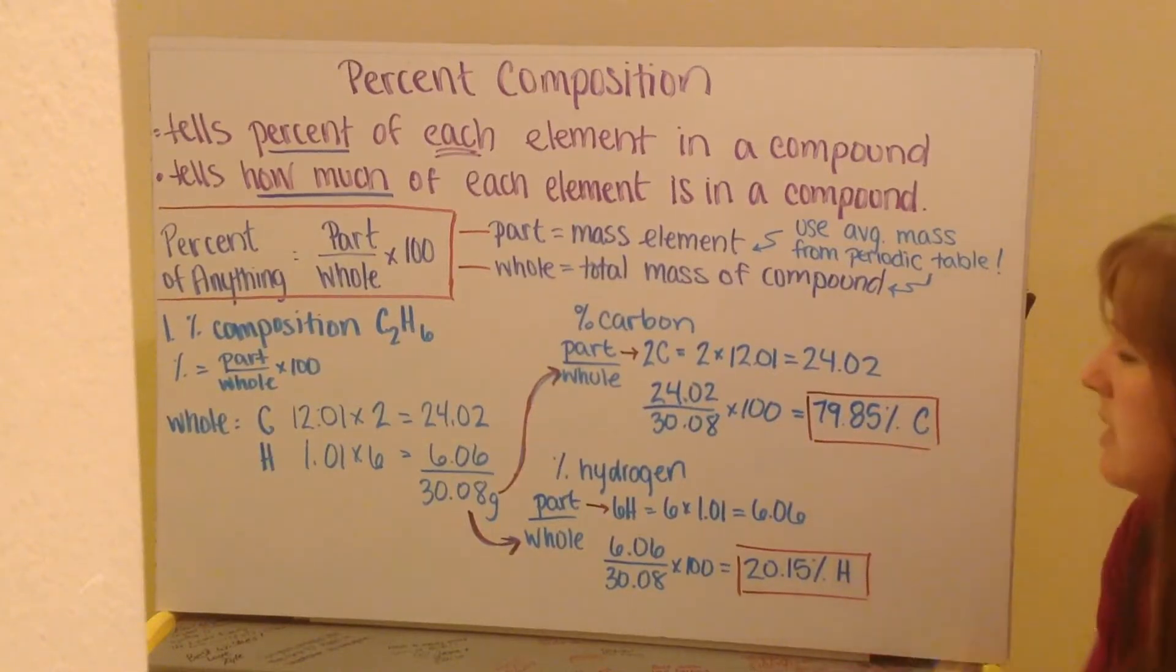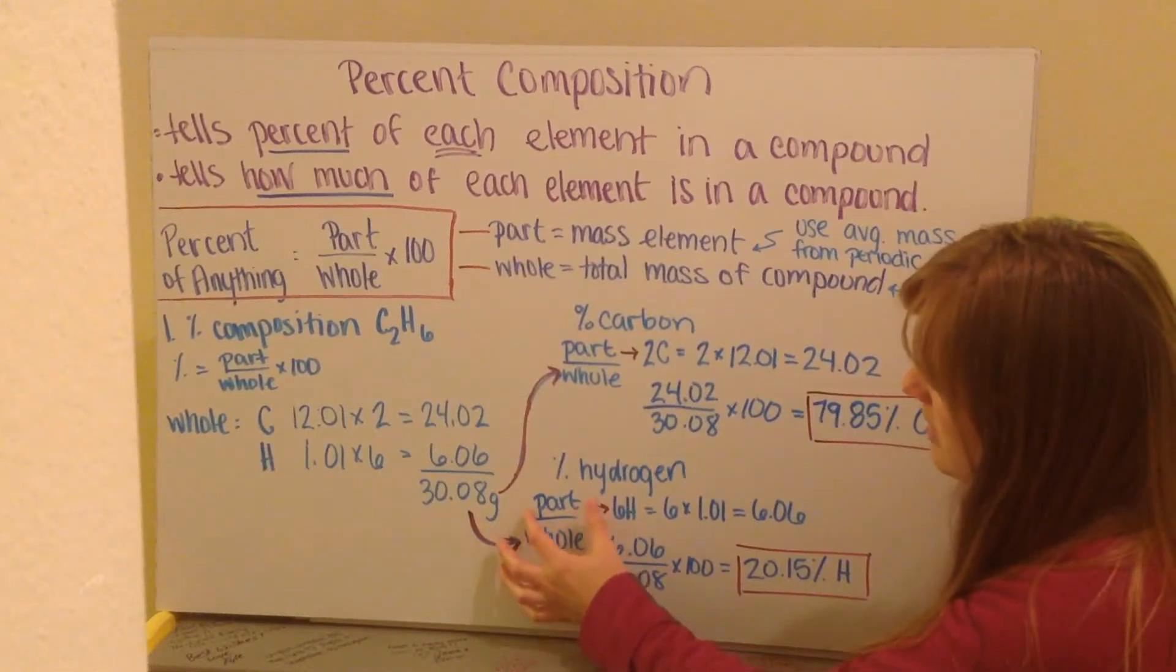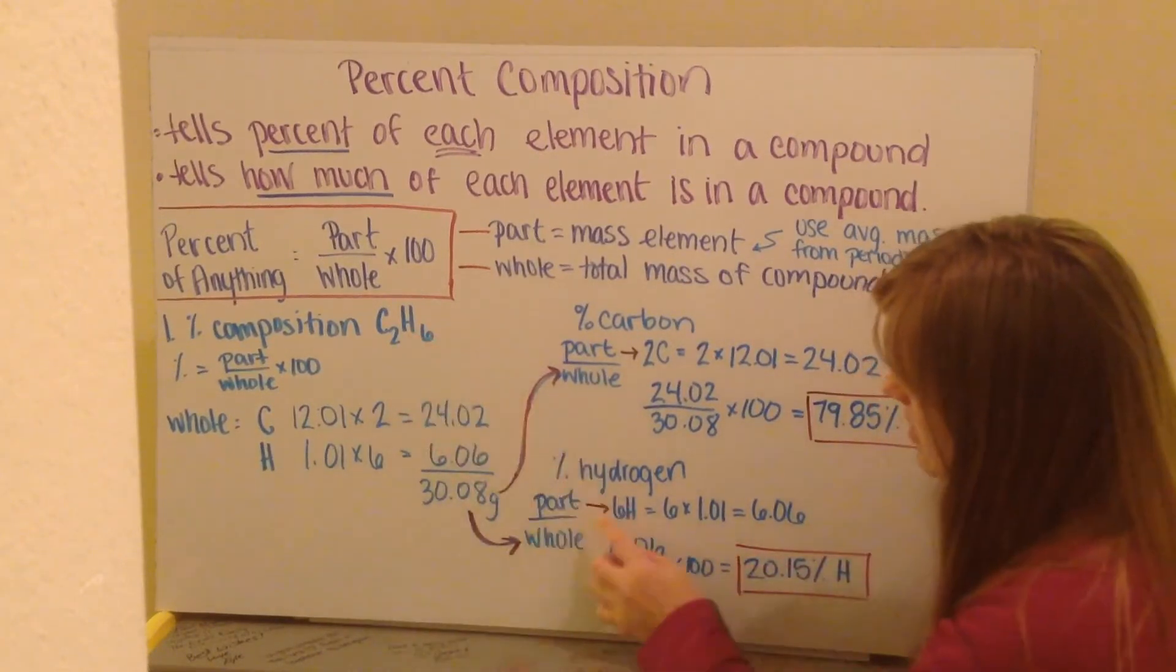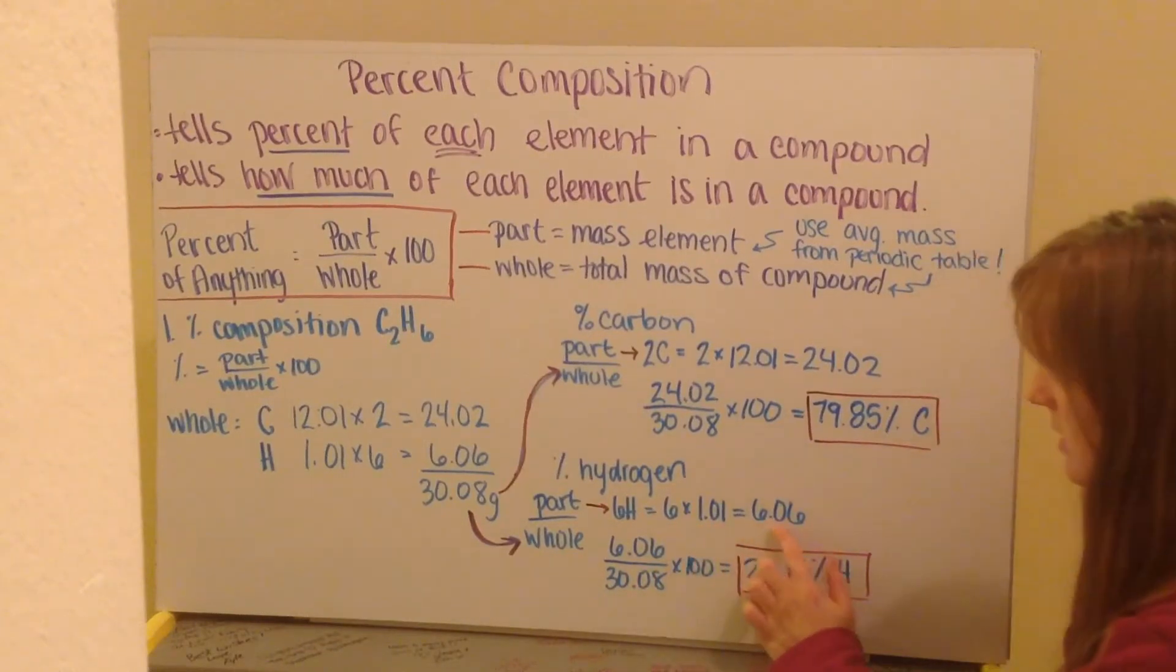Then I do the same thing for hydrogen. My percent hydrogen, I find by looking at my part of hydrogen that I have. I have 6 hydrogen atoms, so 6 hydrogen, therefore it's 6 times my mass of 1.01, gives me 6.06. This is my part.